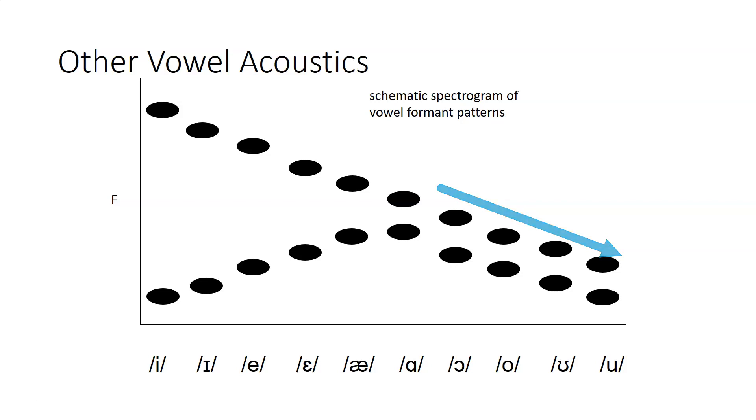So we get this formant pattern where for the front vowels there's a separation between F1 and F2. For the back vowels F1 and F2 are very close to each other, and also the lower that combination is, the higher the vowel is.